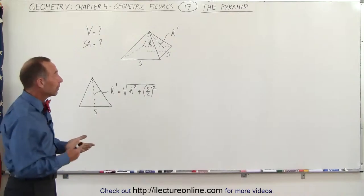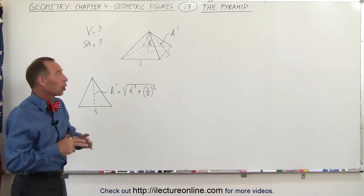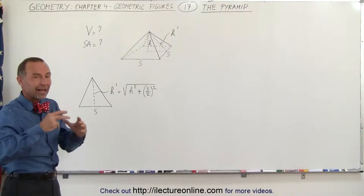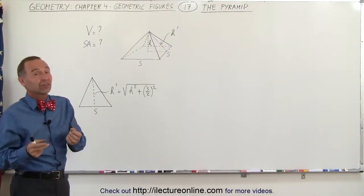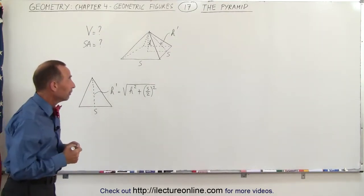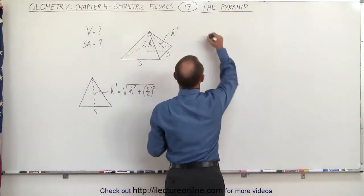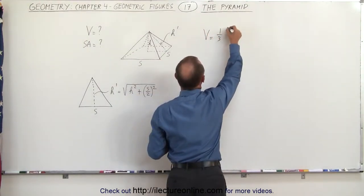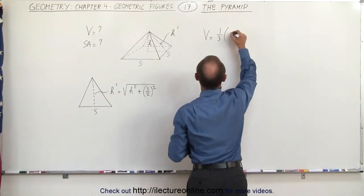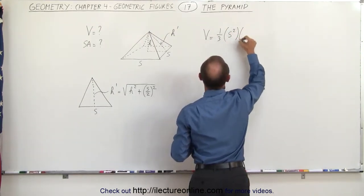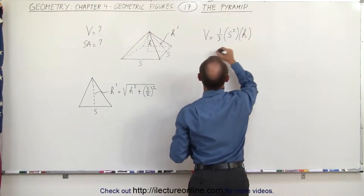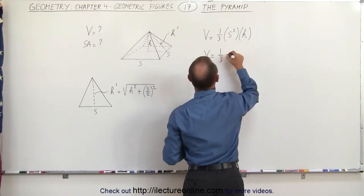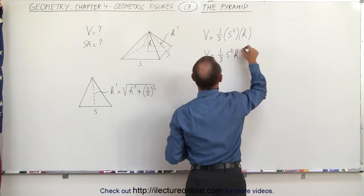The volume will be a lot like the right circular cone. It's the area of the base times the height times some fraction. It turns out the fraction again is one-third. So the volume equals one-third the area of the base — in this case s squared — times the height h. Simply said, V equals one-third s squared h.